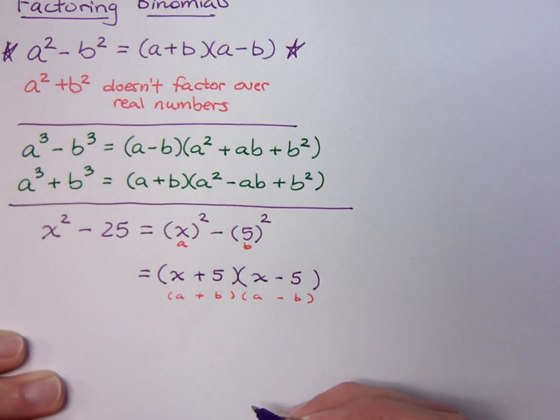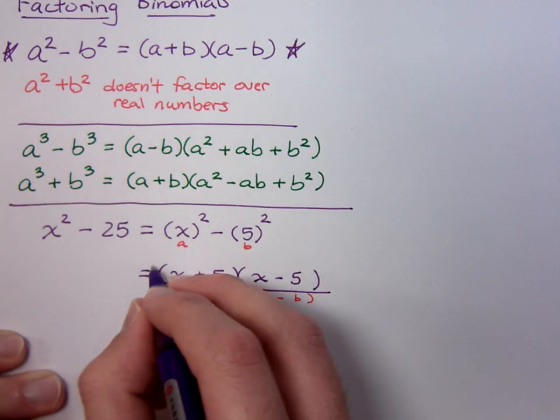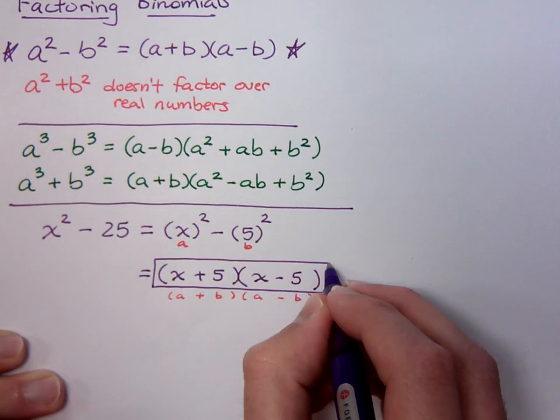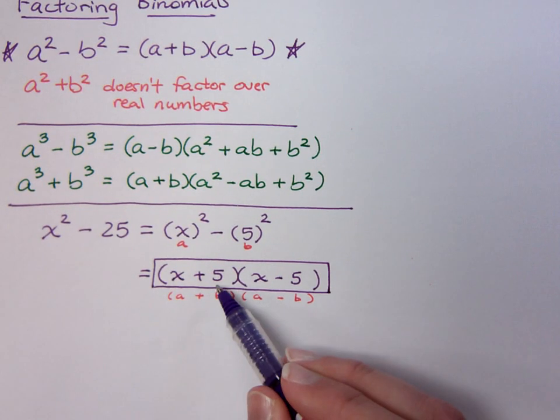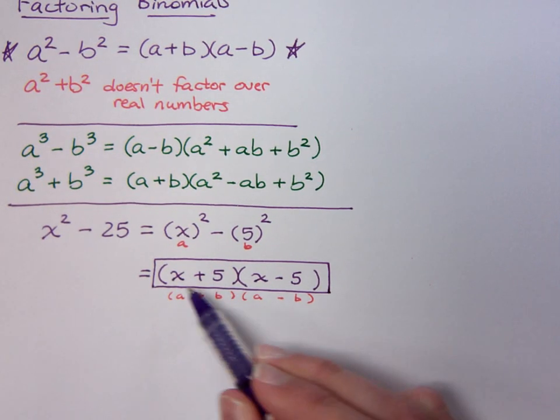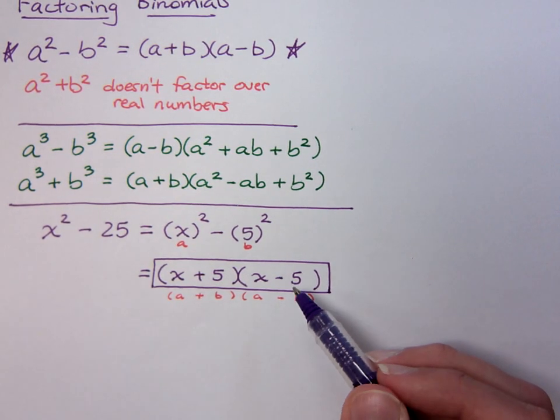And you just factor the difference of squares. In a previous chapter we learned how to multiply and see that the result was the difference of squares. Because if you check this out, plus 5x on the inside, minus 5x on the outside, becomes zero. So that's why you don't have an x term right here.